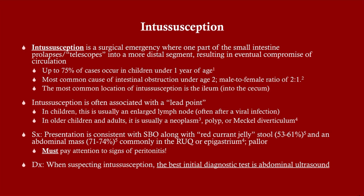Look for a young child with a history of a viral GI infection such as gastroenteritis who now has colicky abdominal pain and guaiac-positive stool. You must pay attention to signs of peritonitis in any patient with a small bowel obstruction, especially intussusception, because it will dramatically change management. If the patient is stable with no signs of peritonitis, the best initial diagnostic test is an abdominal ultrasound. In children, you always want to avoid X-ray or CT to minimize radiation exposure.